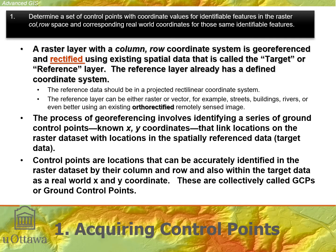Once we have those, we collect ground control points — known as XY coordinates — that link the locations on the raster dataset in column/row with locations in XY of the spatially referenced data, the reference layer. We have to make sure that the control points are easily identifiable in both the reference layer and within the raster to be geo-referenced.